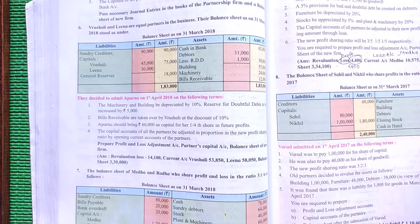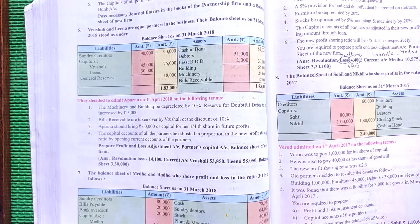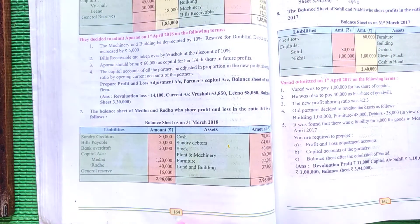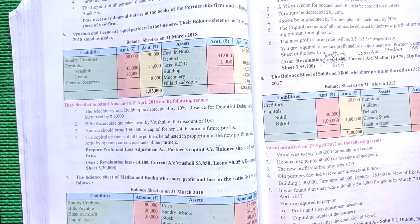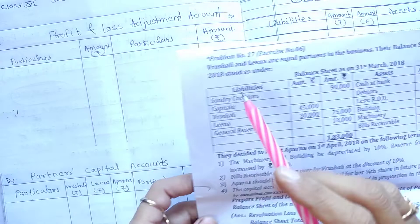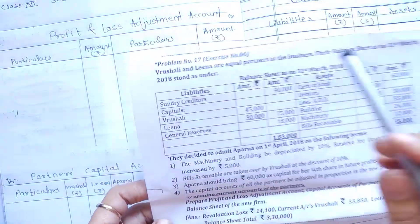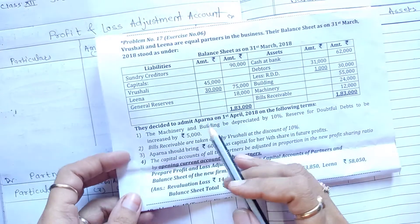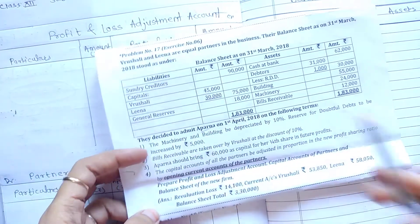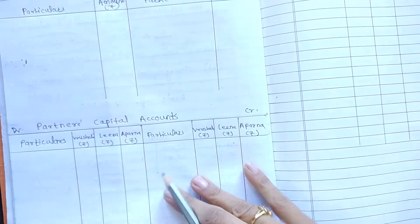Hello students, welcome back to KRS Class 12 Subject Accounts, Chapter 3: Admission of a Partner. We will now see question number 6, which you will find in your textbook on page 164. This sum is not solved in your textbook, so we will solve it here. Vrushali and Lina are equal partners in the business. Their balance sheet is as on 31st March 2018. They decided to admit Aparna, so there are three partners: Vrushali, Lina, and Aparna.